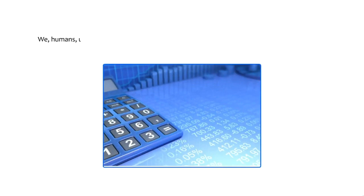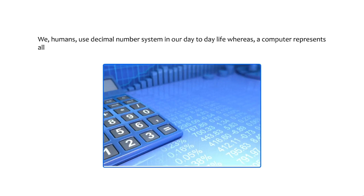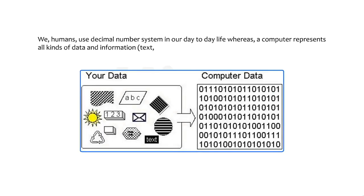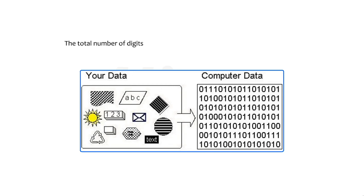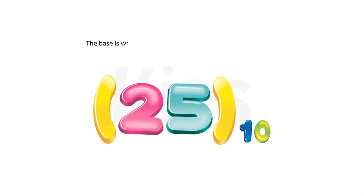We humans use the decimal number system in our day-to-day life, whereas a computer represents all kinds of data and information — text, numbers, graphics, etc. — in binary number system. The total number of digits used in a number system is called its base or radix. The base is written after the number as a subscript, such as 25 base 10.